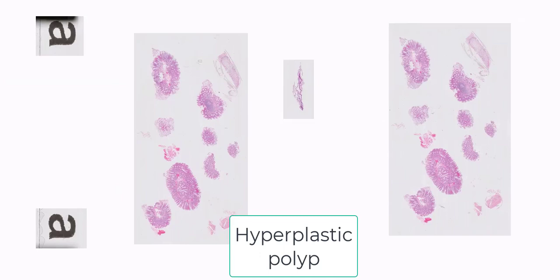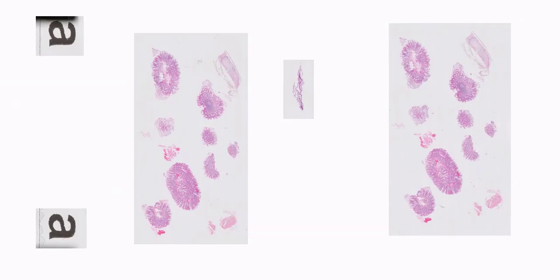This is the most common polyp in the colon: a hyperplastic polyp. Even the humble hyperplastic polyp can occasionally pose a question. Let's go over the classic histologic features of a hyperplastic polyp and then address the specific question being posed by this polyp.